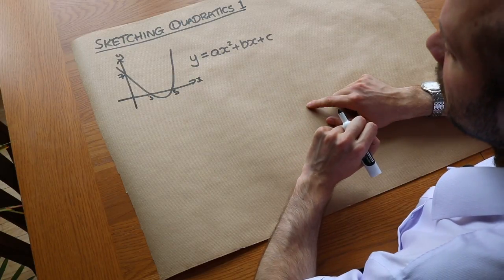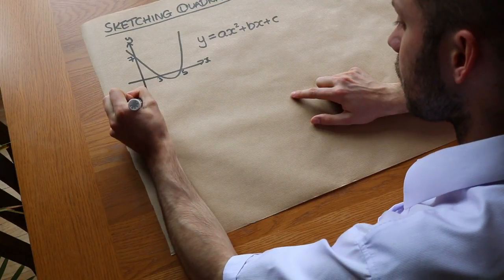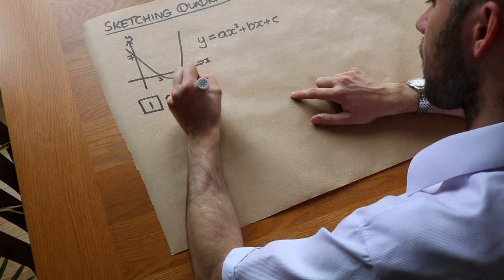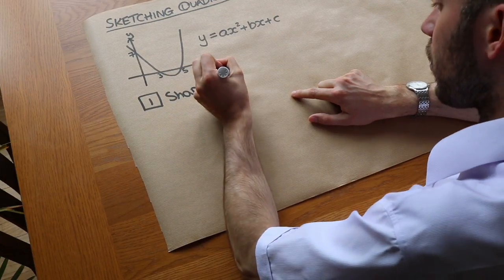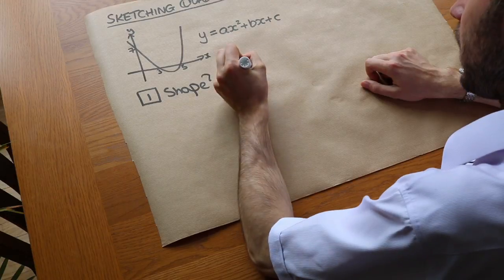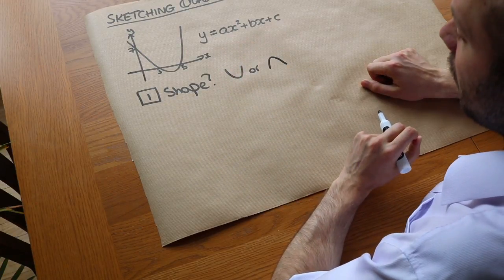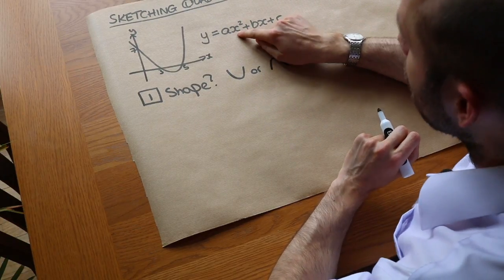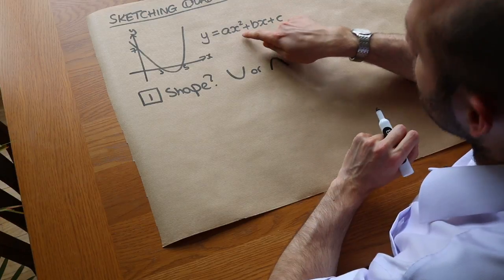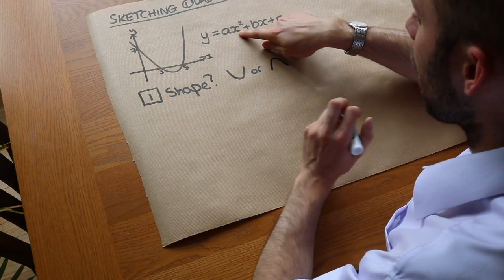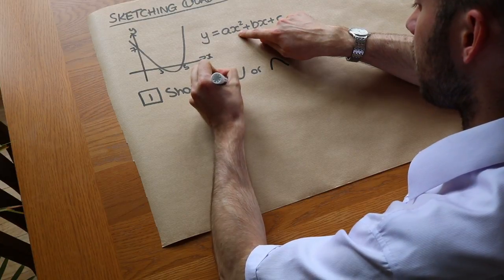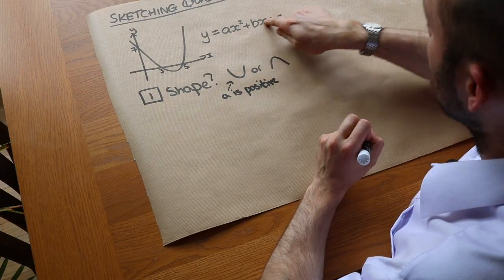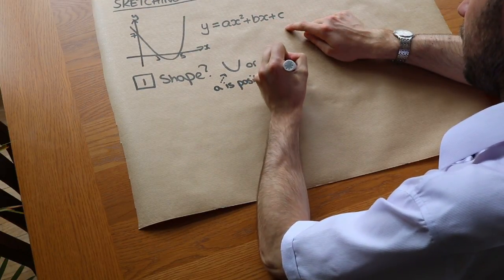There are three features we need to consider when drawing a sketch of a quadratic. The first is the shape — is it a smiley face shape or a frowny face shape? We've seen in previous videos that this is determined by the number in front of the x squared term. If a is positive, we get the smiley face shape, and if a is negative — for example minus x squared plus something — we get the frowny face shape.